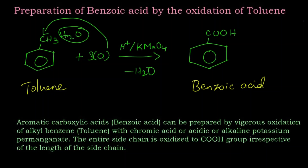Let's summarize the reaction. Aromatic carboxylic acids — that is, benzoic acid — can be prepared by vigorous oxidation of alkyl benzenes such as toluene with chromic acid or acidic or alkaline potassium permanganate. The entire side chain, whether it is a methyl group or an ethyl group, is oxidized to a COOH group.